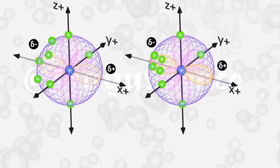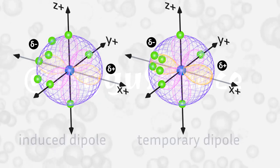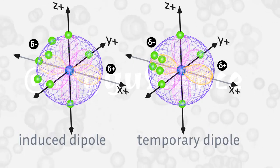Eventually, a momentary dipole is also formed in the other neon atom. This dipole is formed because it is induced by a dipole from another atom. A dipole like this is known as an induced dipole.